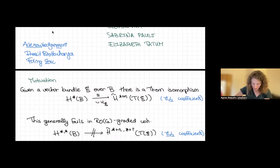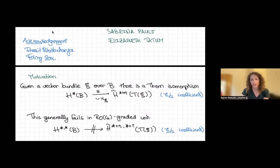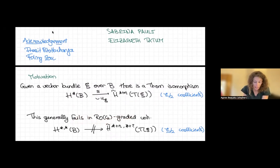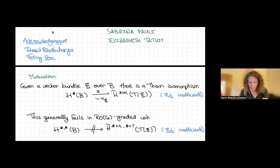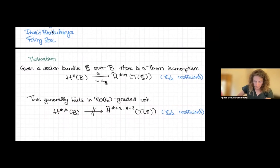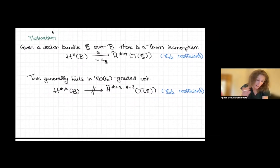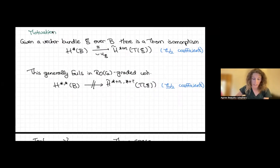A great sadness in the world is that this generally fails in ROG-graded cohomology. For today I'm going to mostly focus on RO(C₂)-graded cohomology. There is not, in general, a Thom isomorphism between the cohomology of the base space and the cohomology of the Thom space. Whenever I'm talking about C₂ cohomology and I have two stars, I mean with constant Z/2 Mackey functor coefficients. You can tell this story with more fancy coefficients, but I'm going to stick with Z/2. Since this generally fails, let's look at a counterexample.